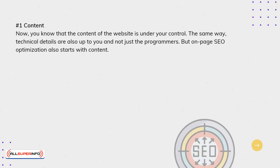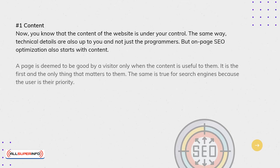Number 1: Content. You know that the content of the website is under your control. Technical details are also up to you and not just the programmers. On-page SEO optimization also starts with content. The page is deemed to be good by a visitor only when the content is useful to them — it is the first and the only thing that matters to them. The same is true for search engines, because the user is their priority.